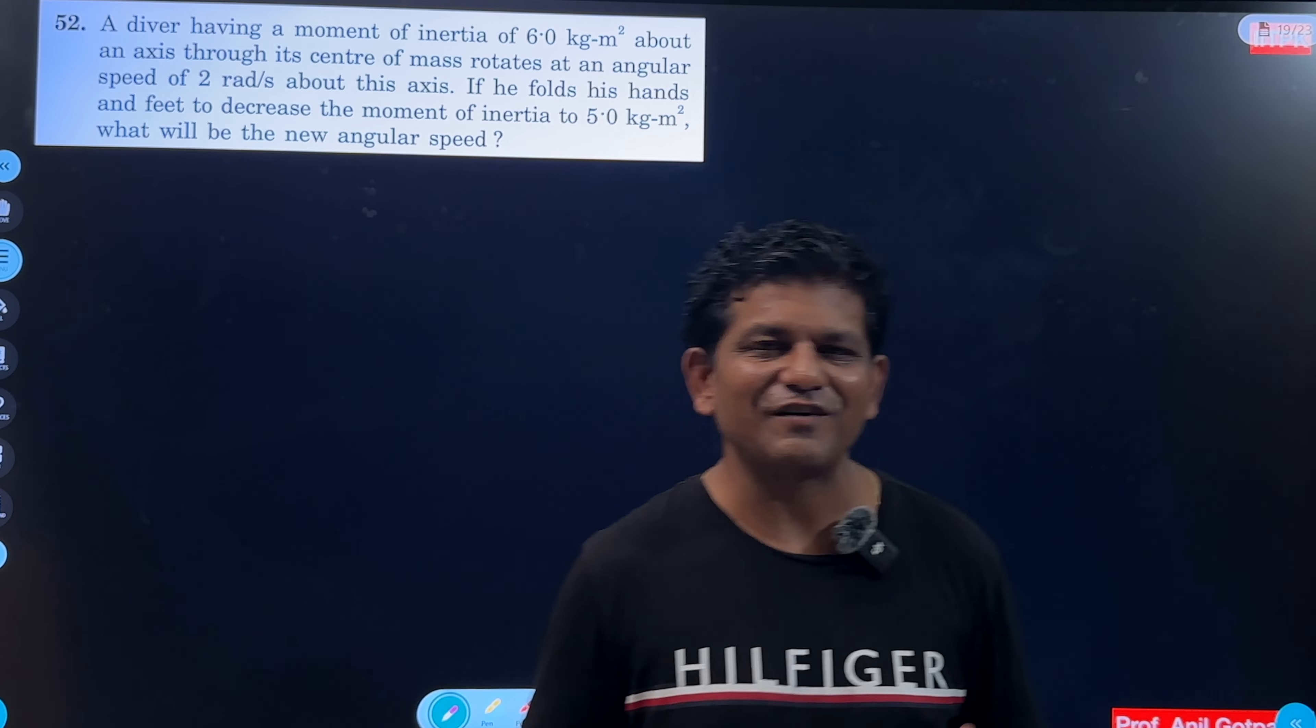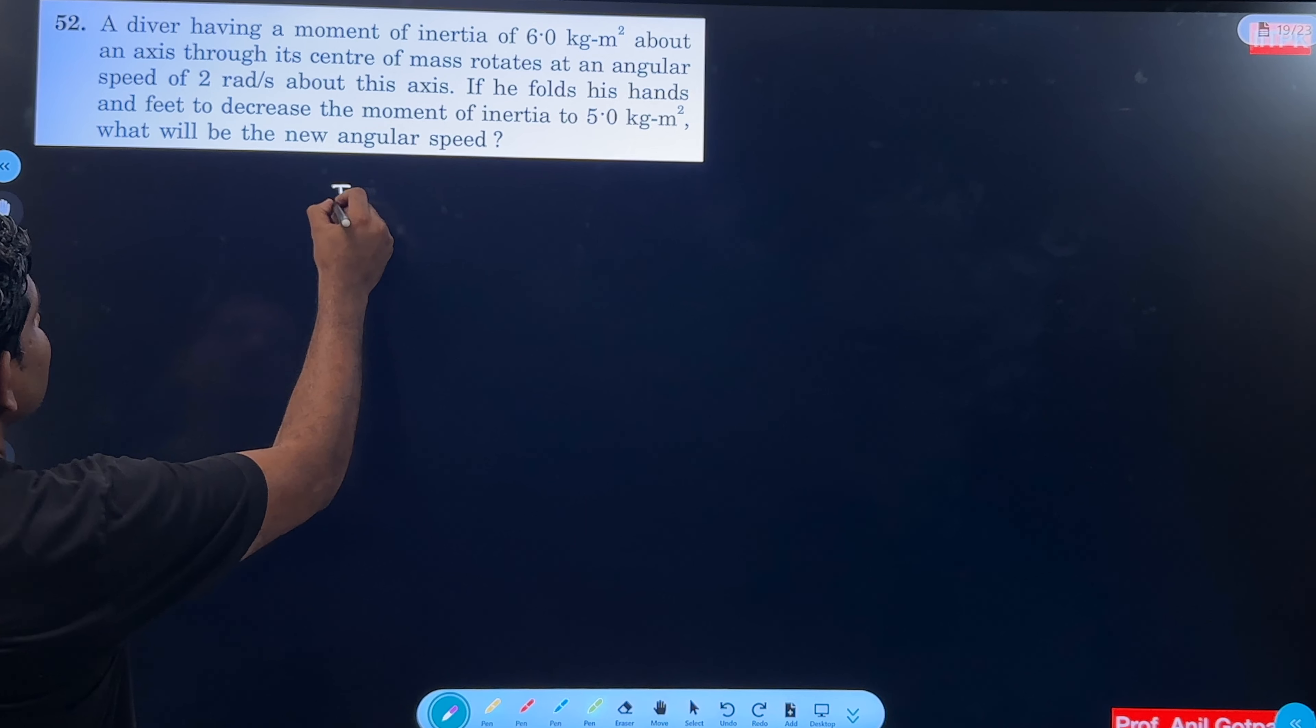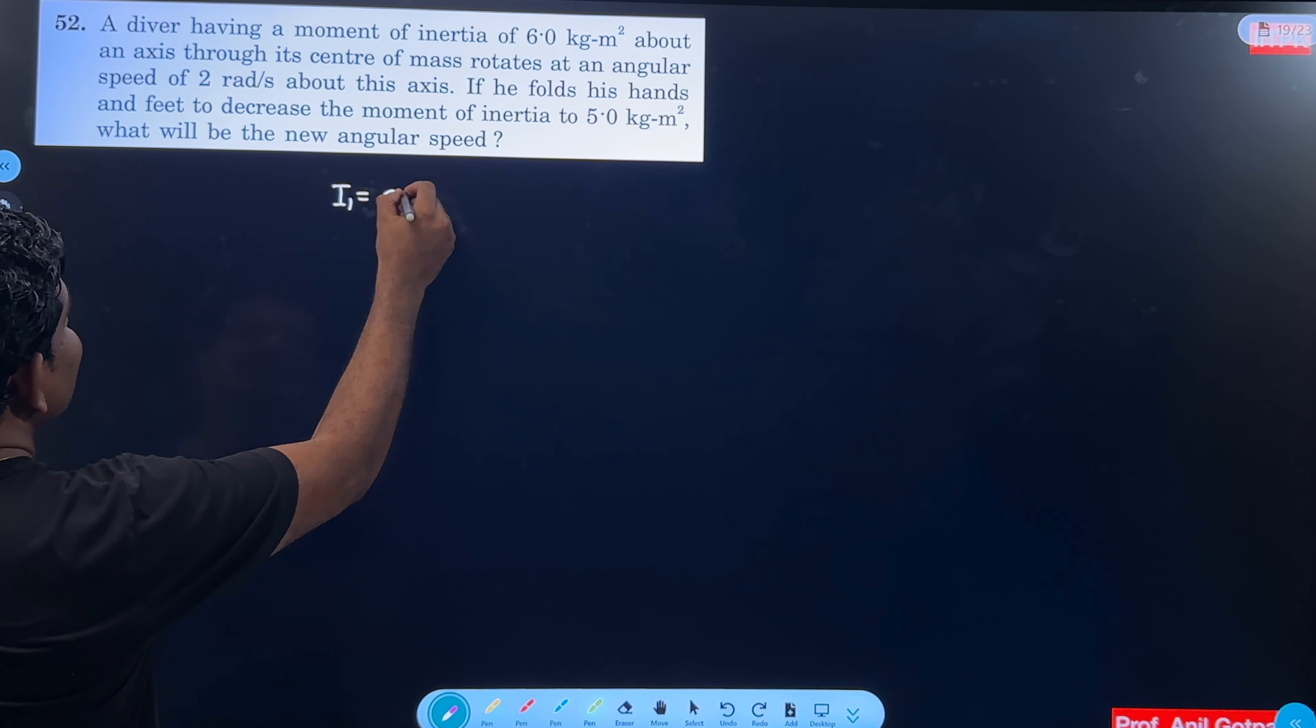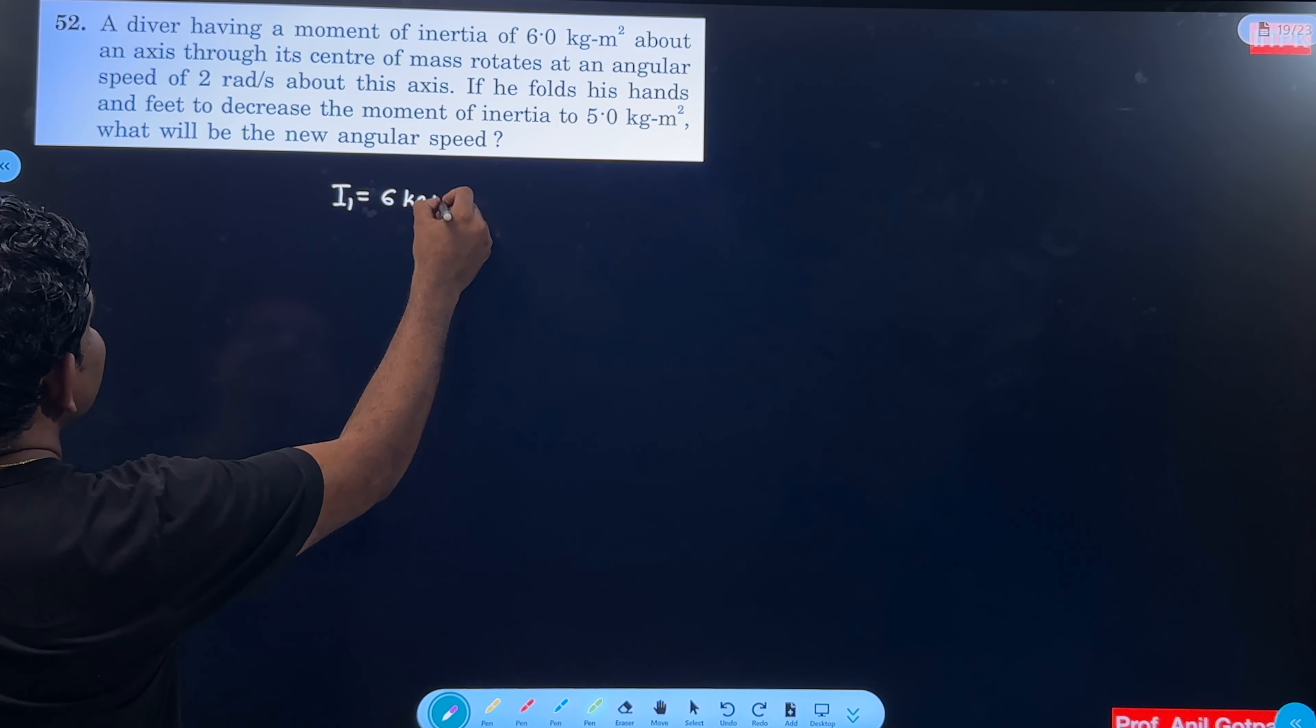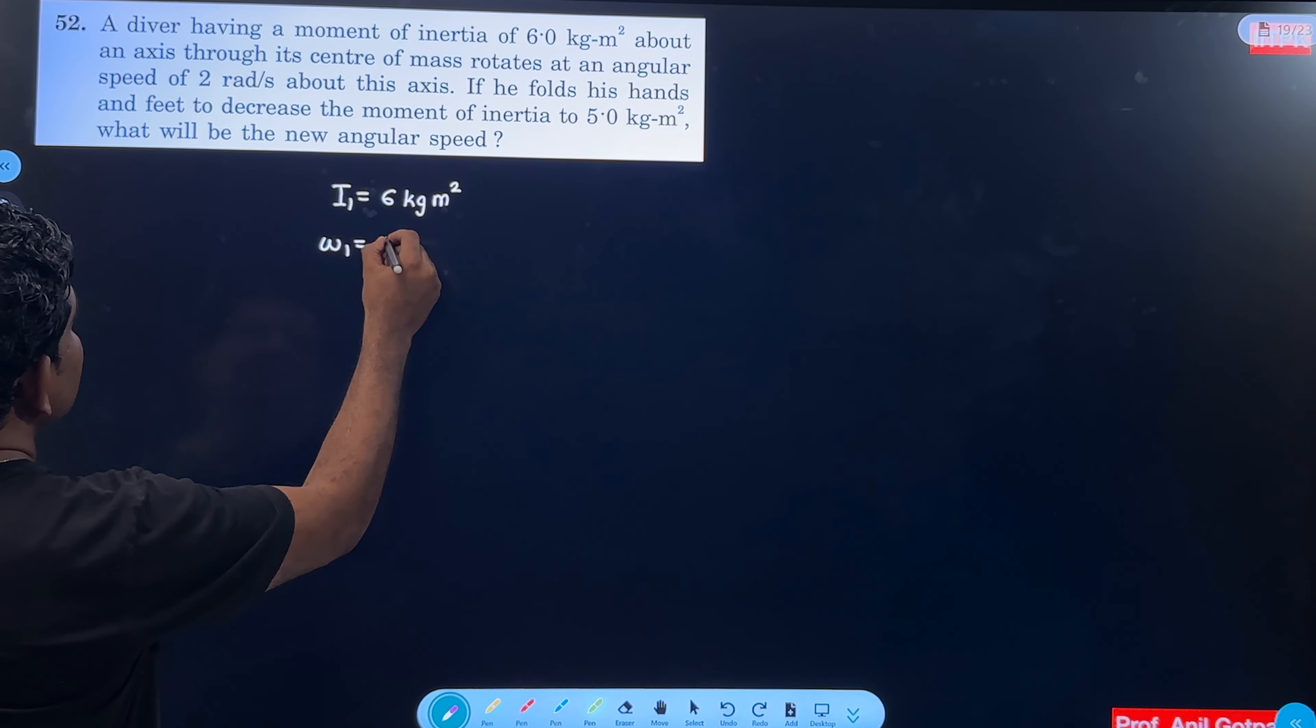Question number 52. A diver having moment of inertia, initial moment of inertia that is 6 kg meter square. It will rotate with some angular speed, 2 radian per second.